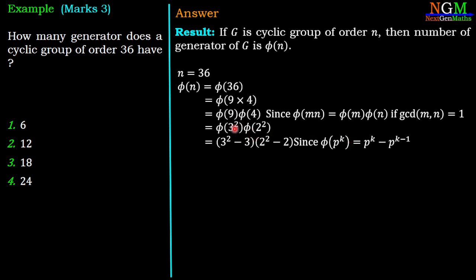So here 3 and 2 are the prime numbers. φ(3²) equals 3² minus 3, and φ(2²) equals 2² minus 2. Then we have 6 into 3 which will give 18.